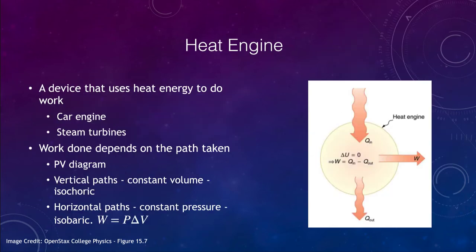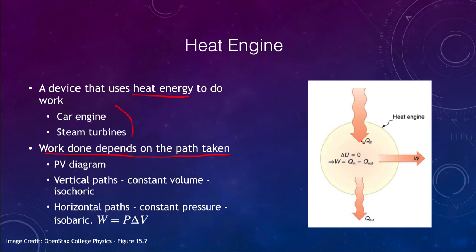Let's look at an example of what we call a heat engine, which is a device that uses heat energy to do work. Examples of those would be things like a car engine or a steam turbine. The work depends on the path that is taken. Some amount of heat comes in, some comes out, and some amount of work is done by the heat engine.